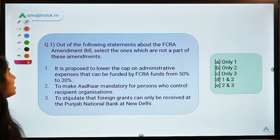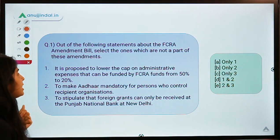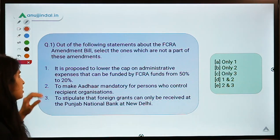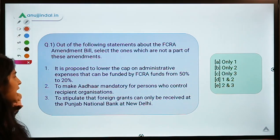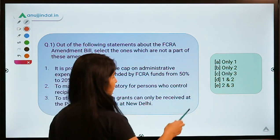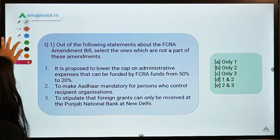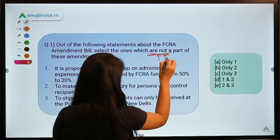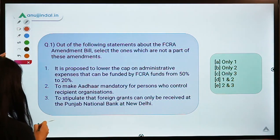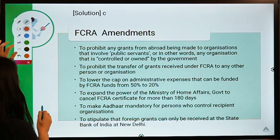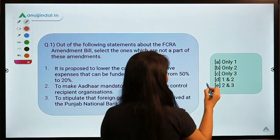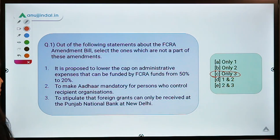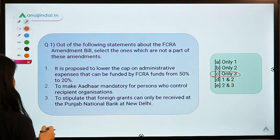Question number one: out of the following statements about the FCRA Amendment Bill, select the ones which are not a part of these amendments. Three statements are given, and you have to select the correct option. The solution is option C, which means only statement three is not part of the amendments — the rest are part of the amendments. Let us analyze the statements one by one.